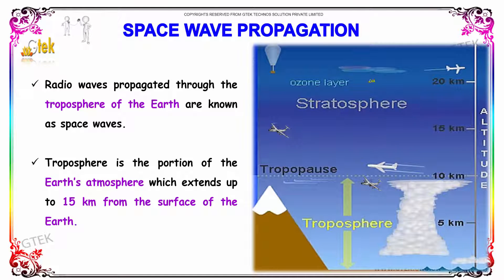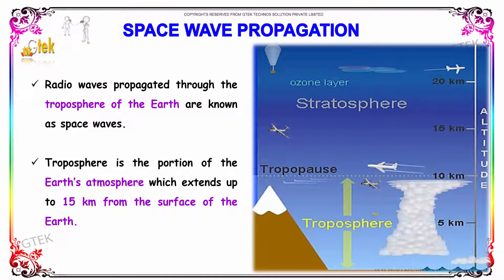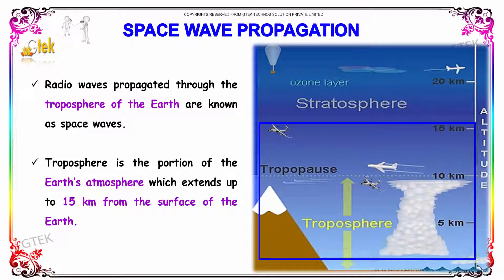At 20 km we have the ozone layer. The troposphere is the portion of the earth's atmosphere which extends up to 15 km from the surface of the earth.